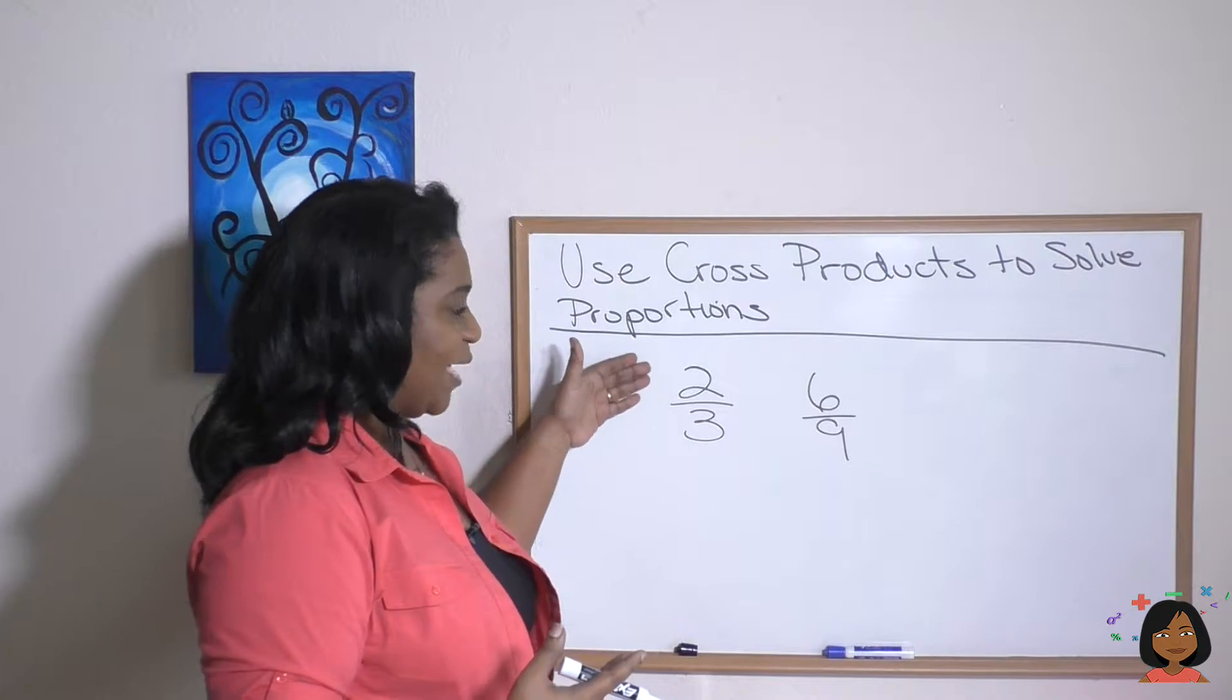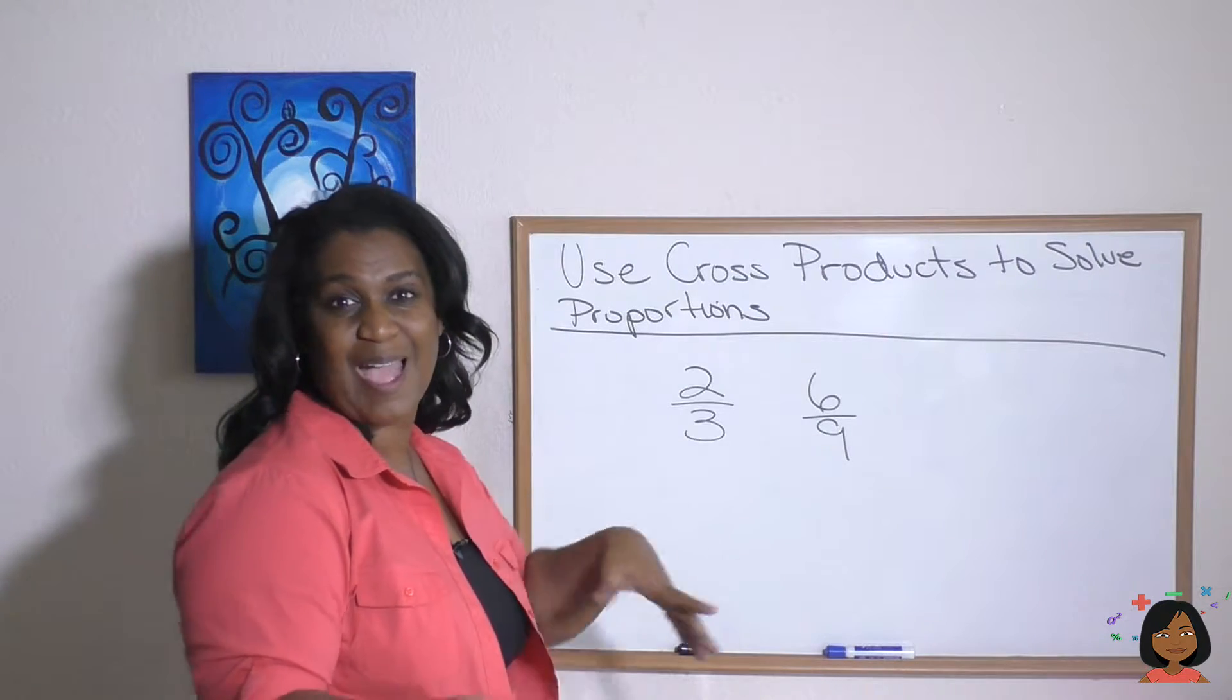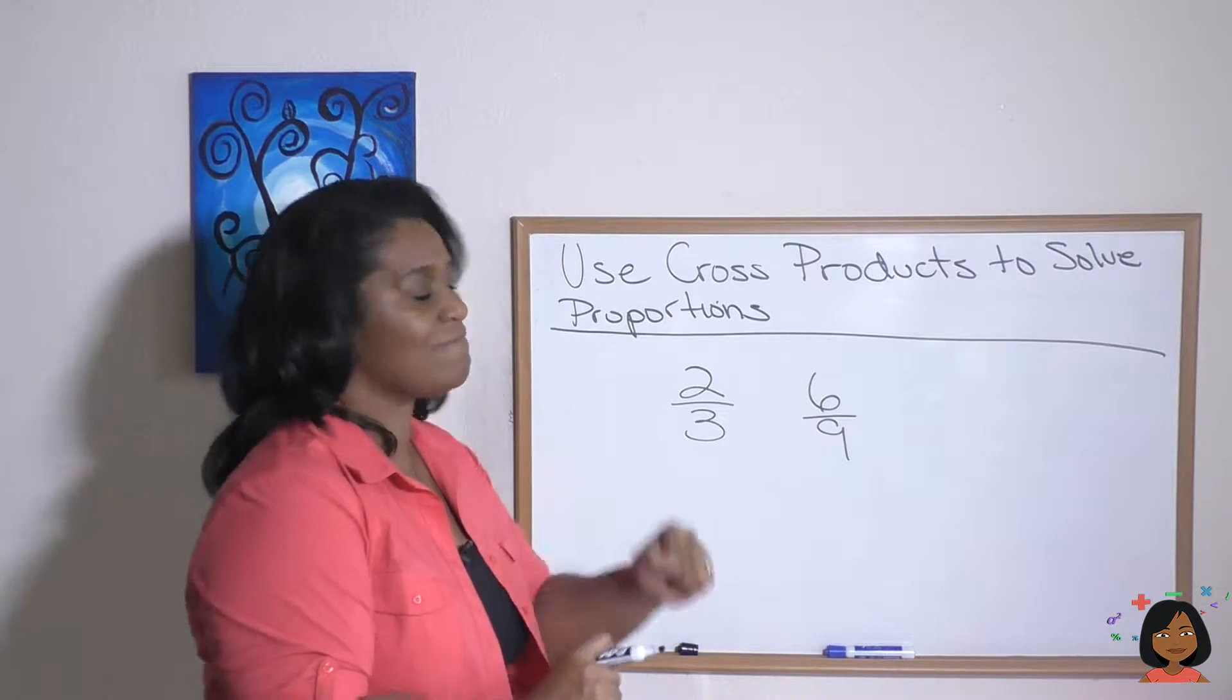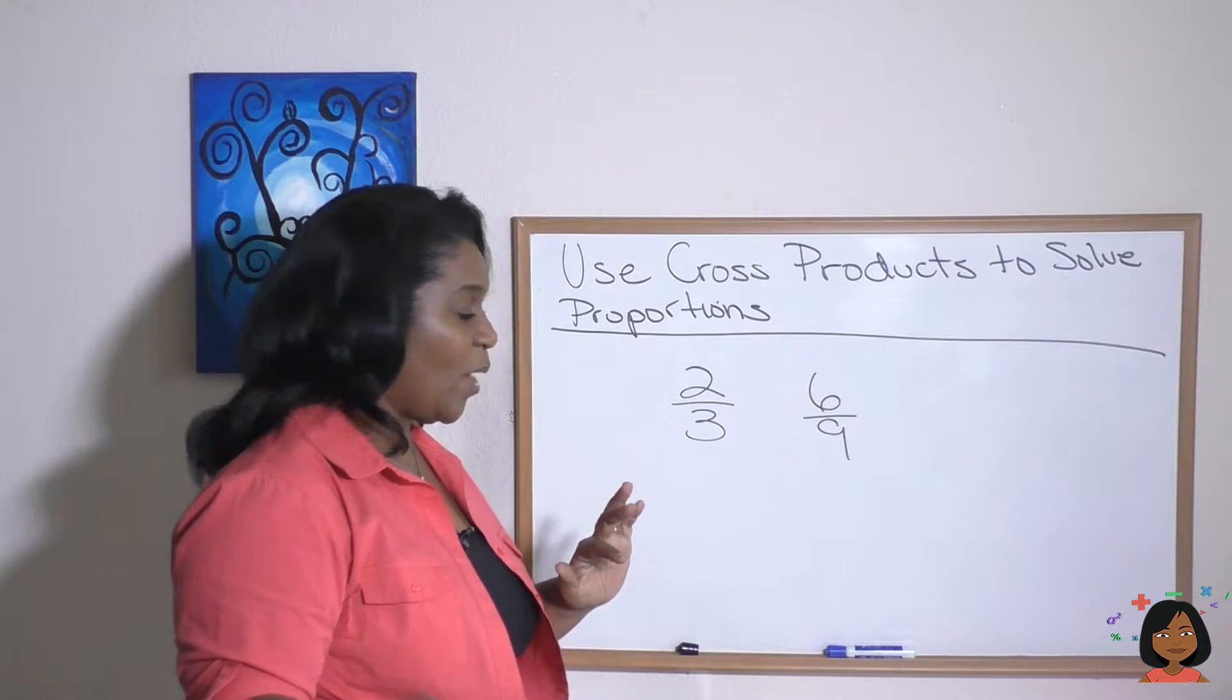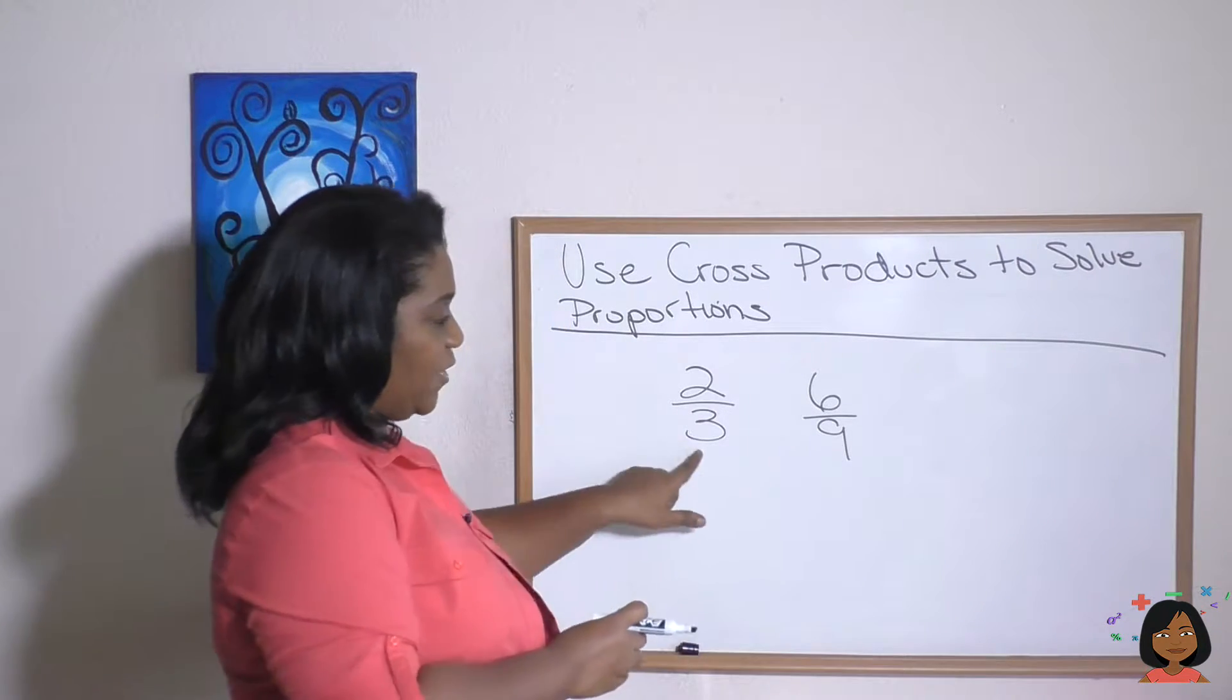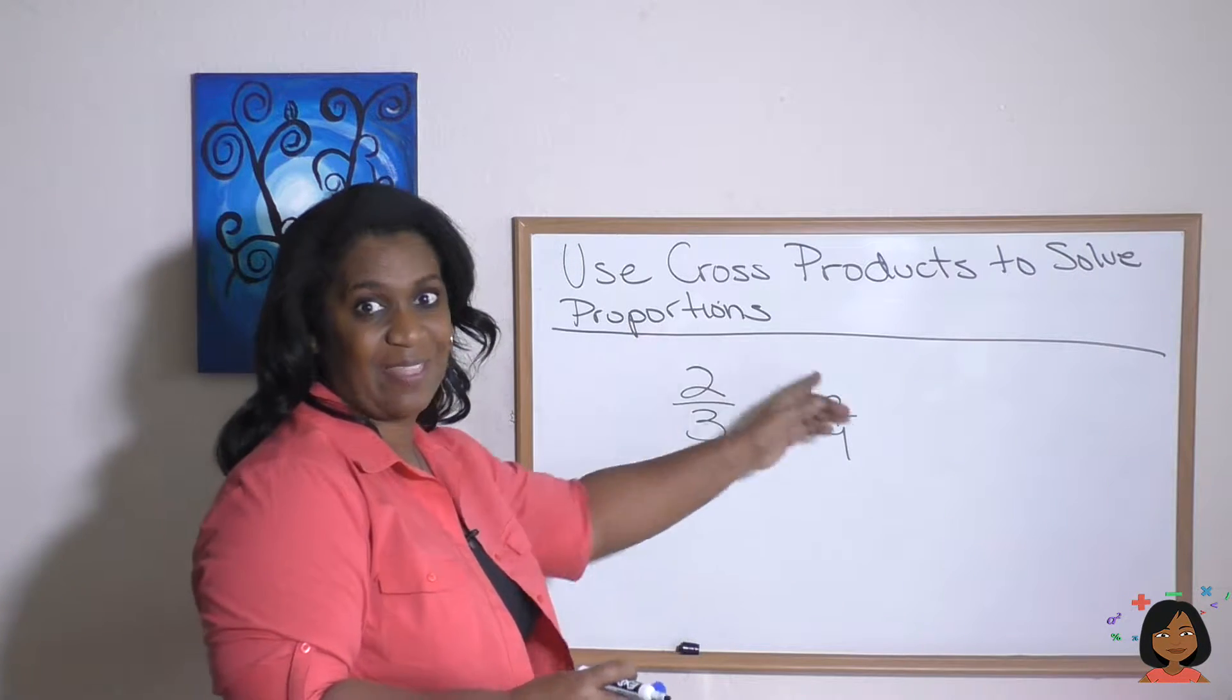This problem, we have 2/3 and we have 6/9, or we have two is to three as six is to nine when we talk in ratio talk. But how do I know if these are equal? Well, one way we know that it's equal is I figure out what number I multiply this ratio by to get this one.